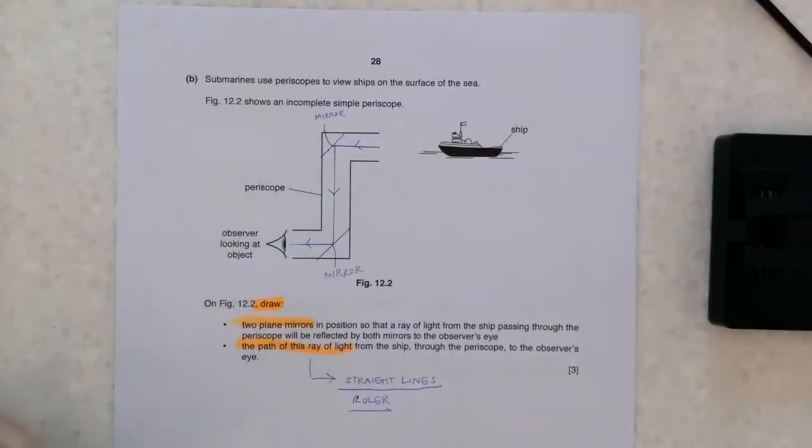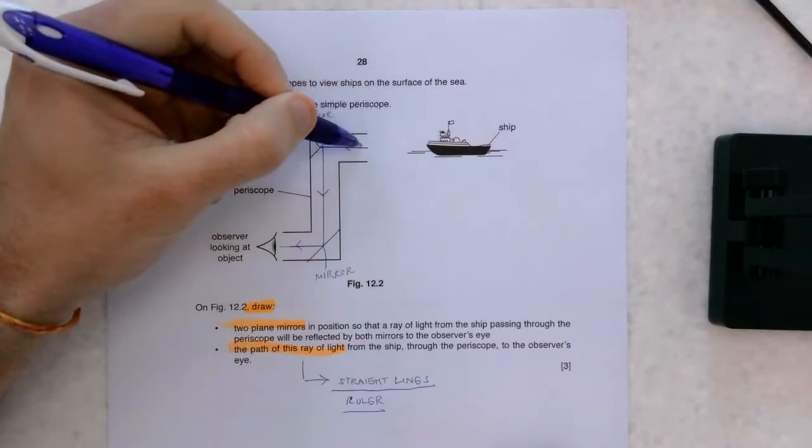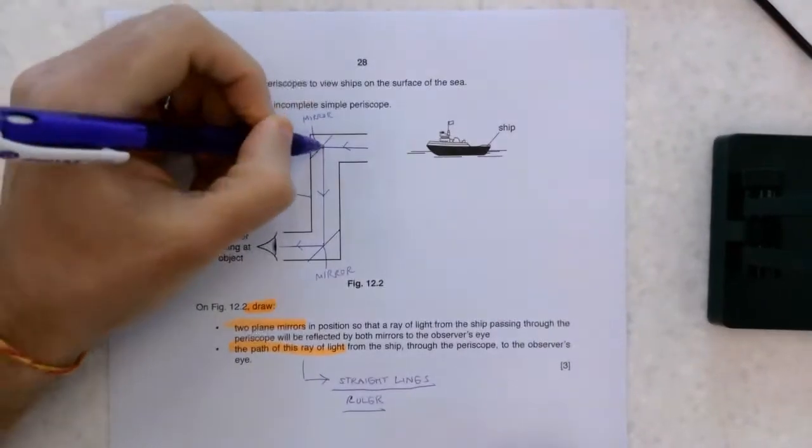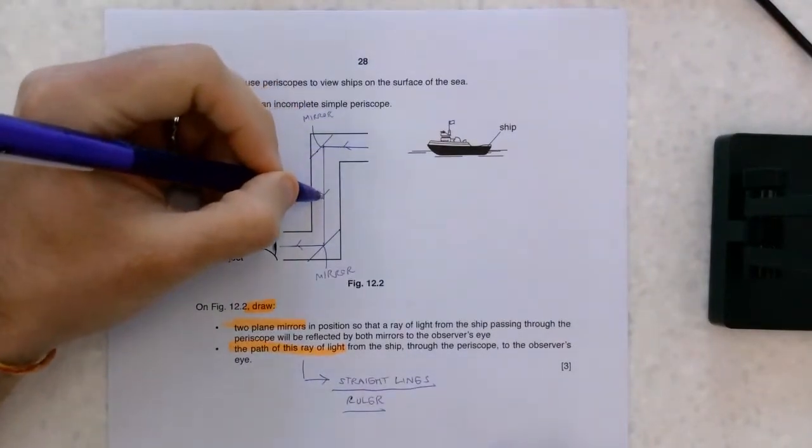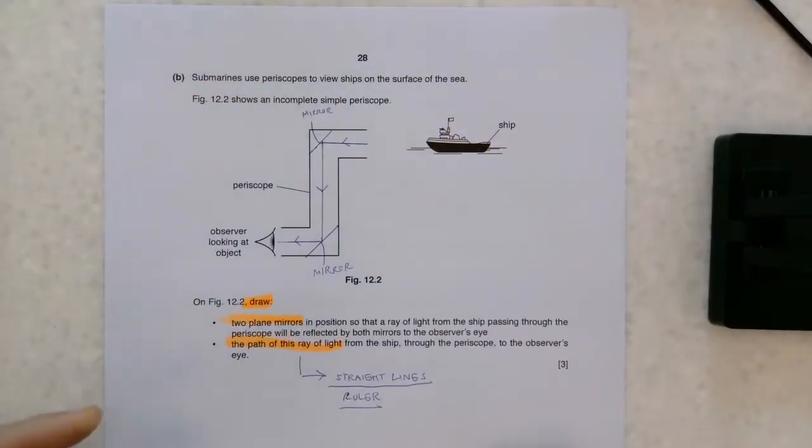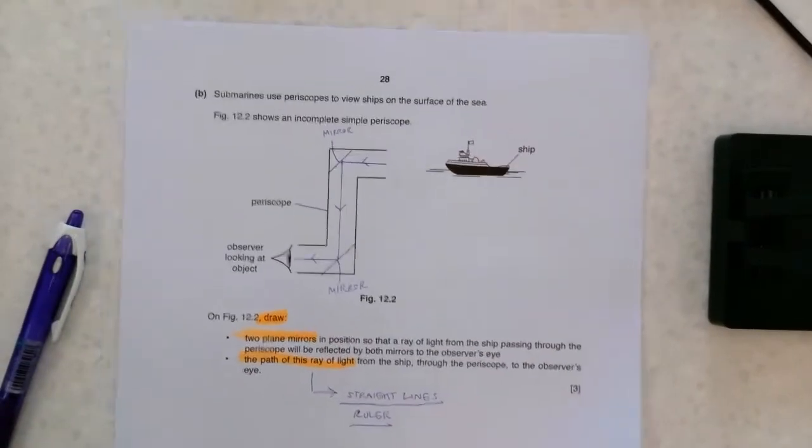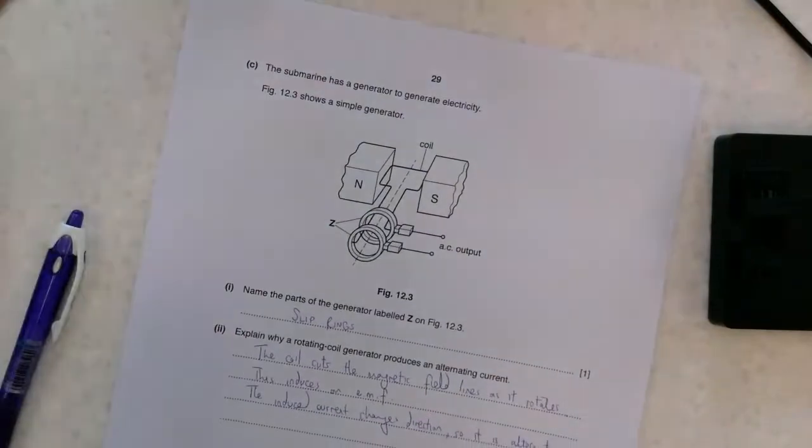Light travels in straight lines in physics world. The idea here is that I've got my two mirrors. This is a mirror and this is a mirror. They are plain, i.e. they are flat. The light is coming from my ship and into here. We're then reflecting off that mirror, coming down and reflecting again and into my eye.